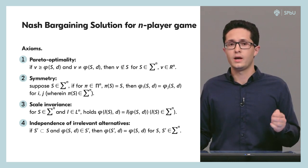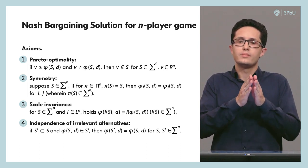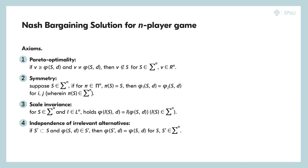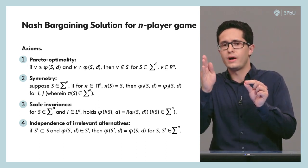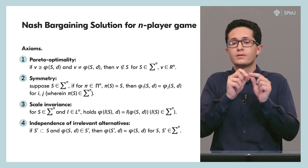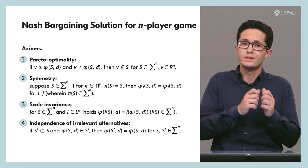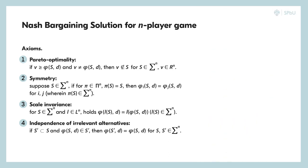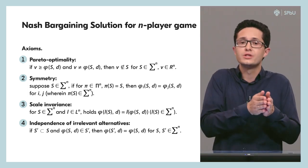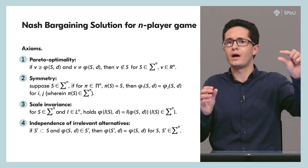The first axiom is Pareto optimality. The bargaining solution is a vector, and it is Pareto optimal when there is no other vector that is better for every player simultaneously. So if there is no vector that improves upon the chosen one for all players, the solution is Pareto optimal. The second axiom is symmetry: the solution satisfies symmetry if we obtain the same solution when we change the names or numbering of the players, meaning the solution depends only on the values, not on player labels.